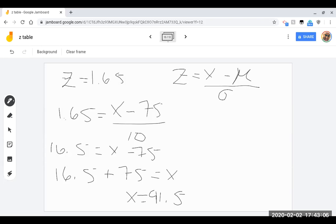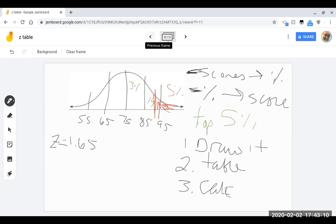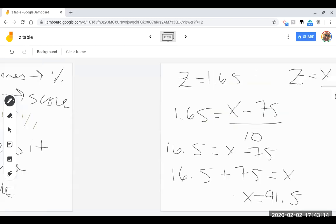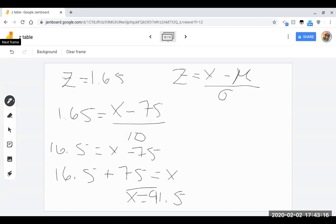Let me go back to my picture and see if that looks right. 91.5 looks about right. That would be right here. So we now know that if you go 91.5 miles per hour, you're at the marker for the top 5% of speeders.